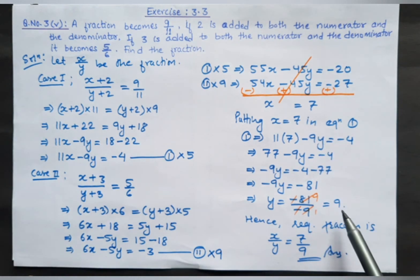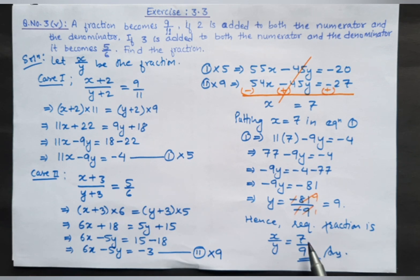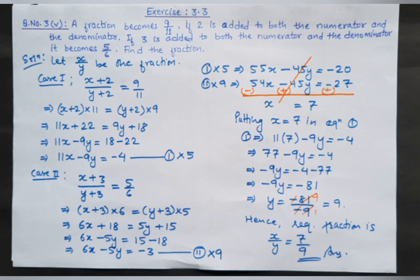So x equals 7 and y equals 9. Therefore our required fraction is x by y, which is equal to 7 by 9. That is our final answer. We have completed question number five of our word problems. The remaining questions we are going to do in our next class. Till then keep practicing, and thank you very much.